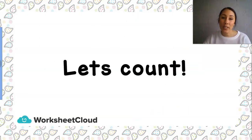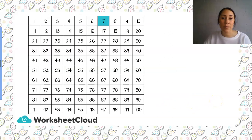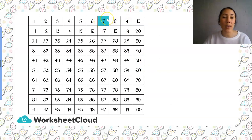But before we look at our new topic for today, we're going to wake our brains up a little bit. So we're going to count together. Let's have a look at this 100 chart, and we're going to count in 10s from 7. Here you can see 7 is blue right at the top, and we're going to count and hop one number down. That is our clever trick to count in 10s.